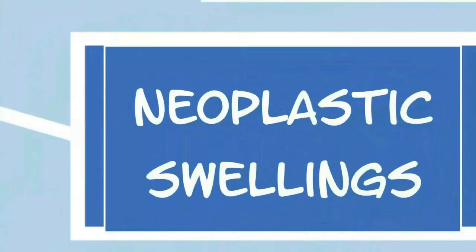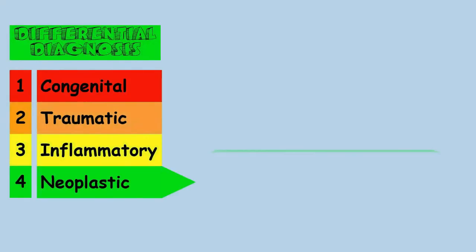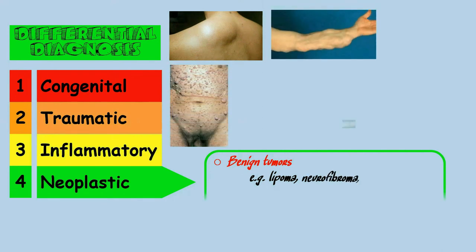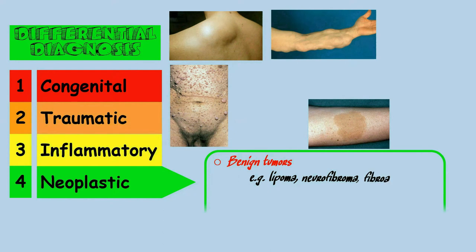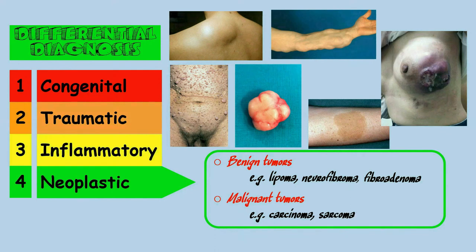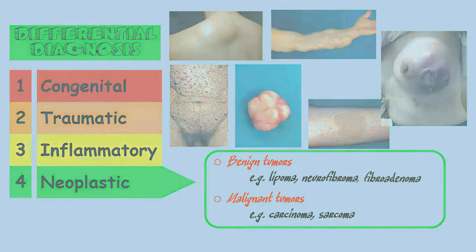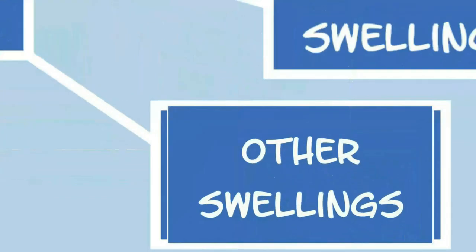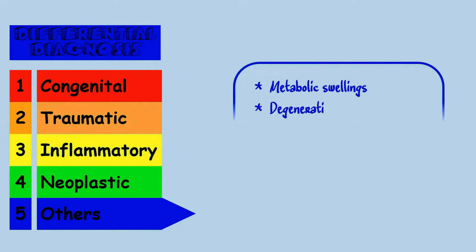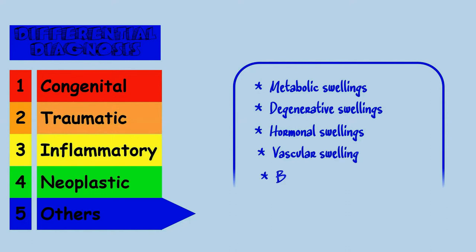The neoplastic swellings may be benign; the most common benign tumor is lipoma. Malignant tumors may be of epithelial origin, like carcinoma, or mesodermal origin, like sarcoma. The last group — the others — includes a variety of swellings, like metabolic, degenerative, hormonal, vascular, blood diseases, etc.